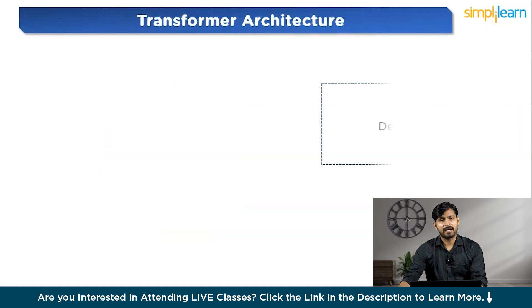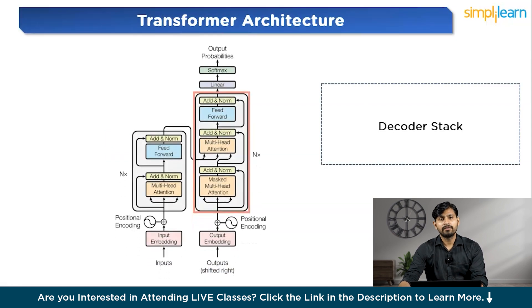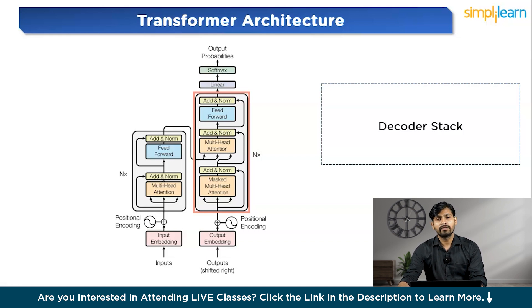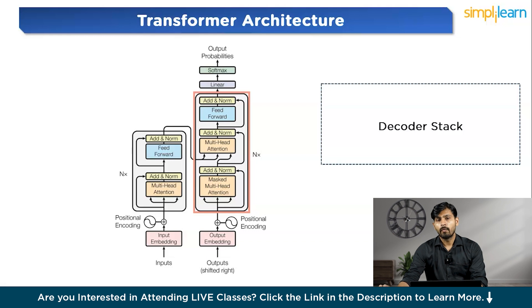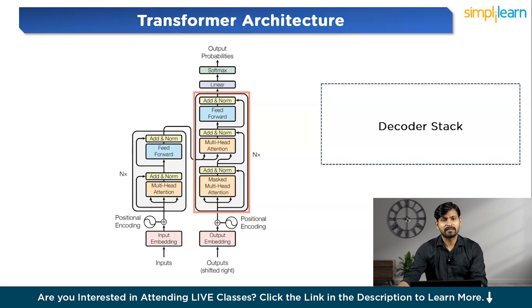Next, we have the decoder stack. The decoder takes the representation from the encoder and uses it to generate the output sequence — the translated sentences in French. Each decoder has three main components: masked multi-head self-attention, which ensures the model can only look at words it has already predicted, preventing it from cheating by looking ahead; encoder-decoder attention, which attends to the encoder's output to help the decoder focus on relevant parts of the input sequence; and a feed-forward network, which further processes the output of the attention layers to refine predictions. Both encoder and decoder are repeated multiple times in a stack — often six layers — to improve the model's ability to understand and generate complex sequences.